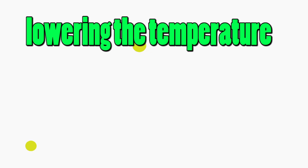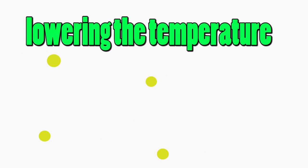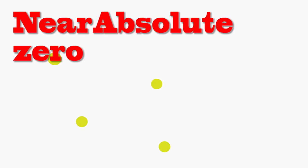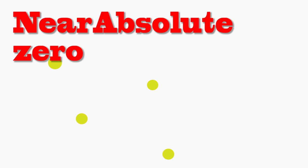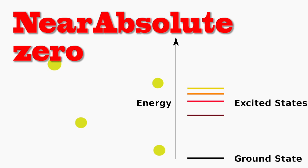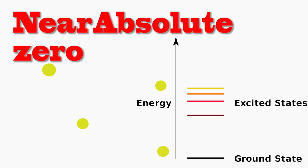So as we cool atoms, their kinetic energy decreases. And as we reach absolute zero, they should reach a point where all the motion stops — but that's not what happens. The atoms and particles go to their ground state, but they still have some energy that we call zero point energy, which helps them vibrate a little and thus produce heat.